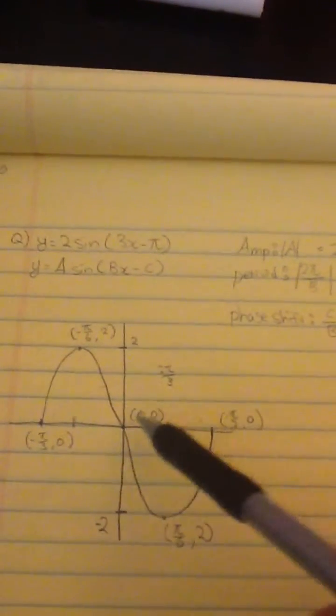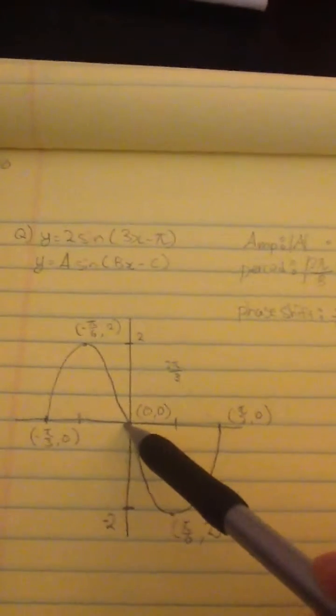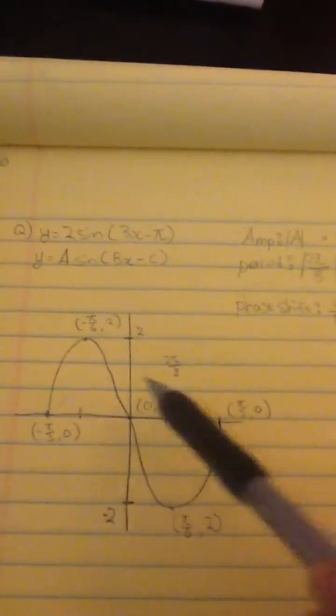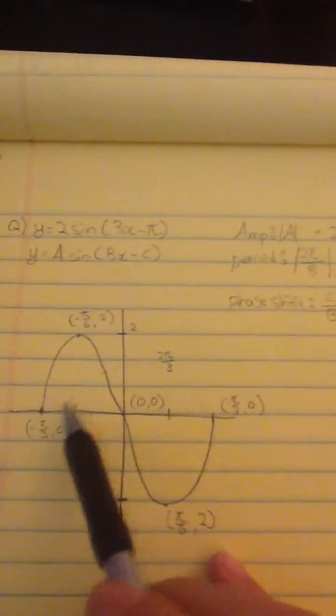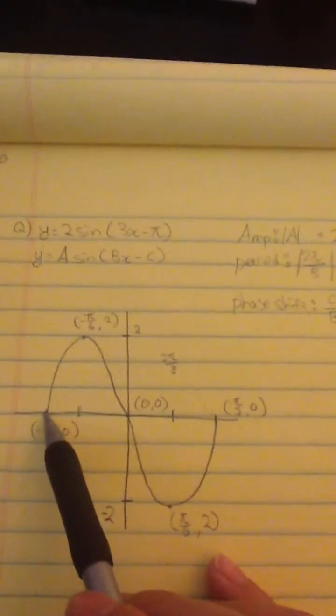I basically just sketched the general form of the sine, which is this kind of circle, and the sine curve goes through the zero point. Five major points that I'm going to have is this starting point here.